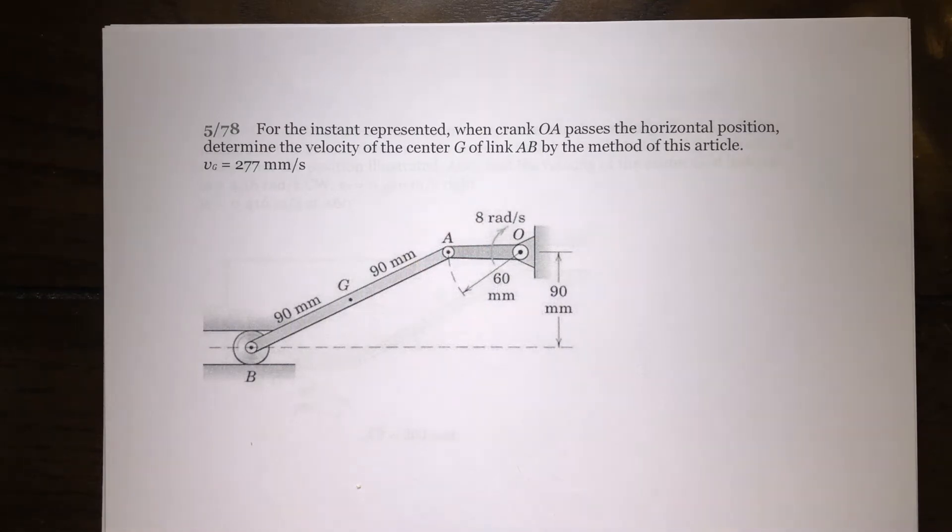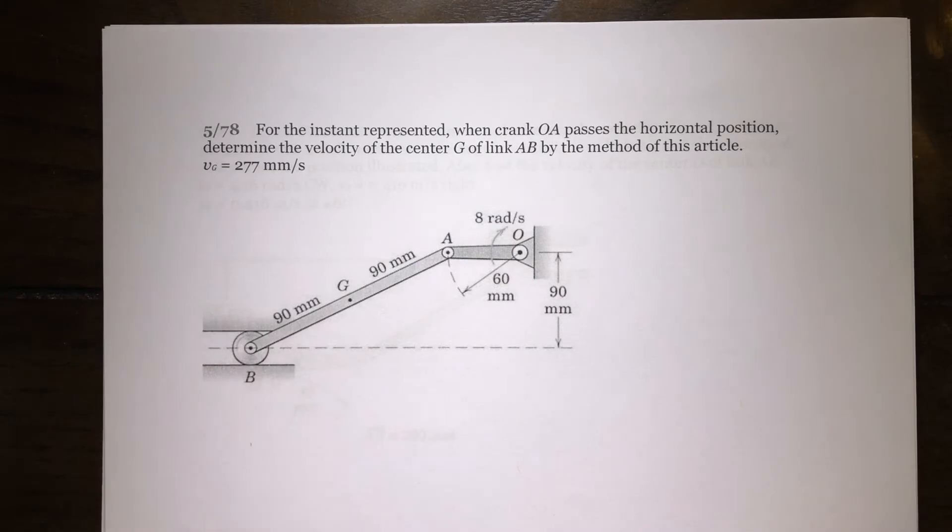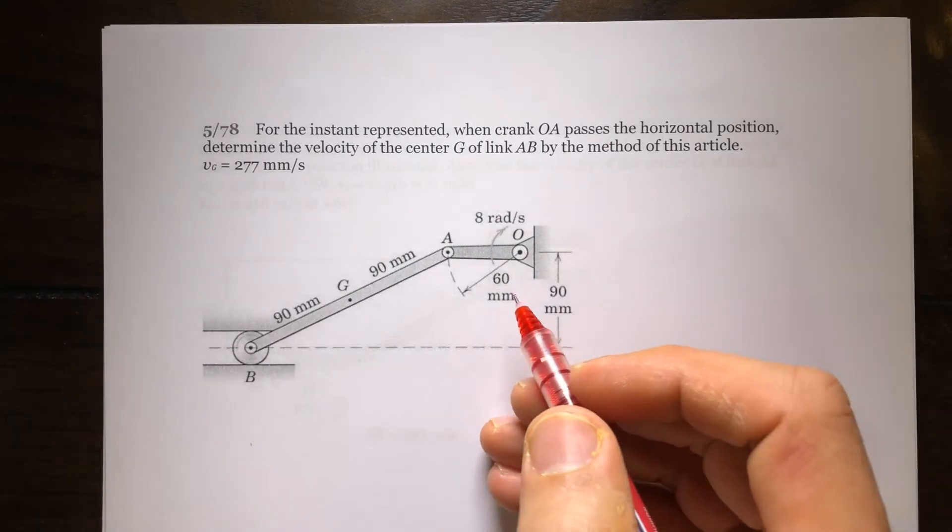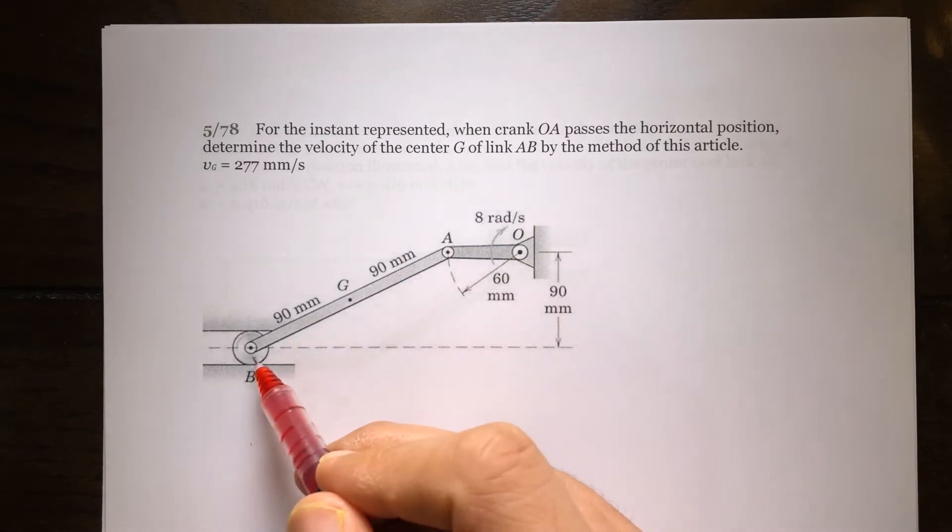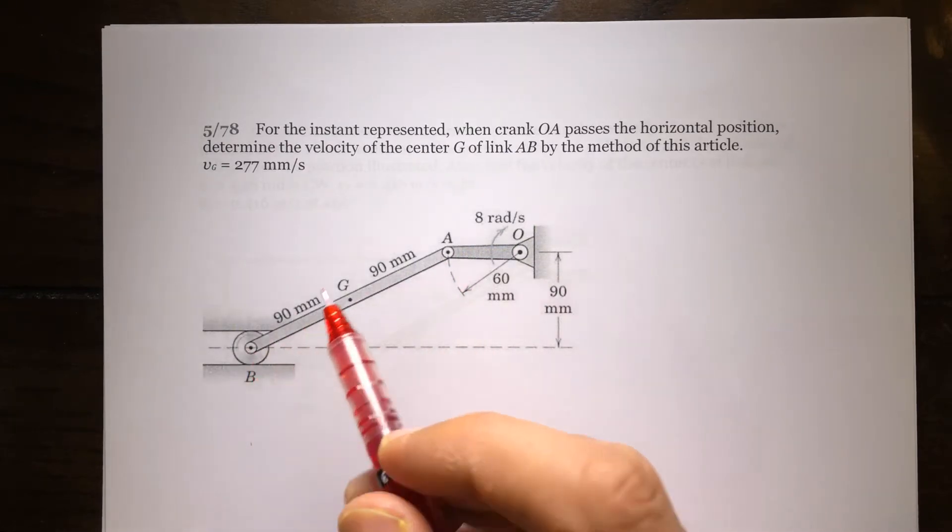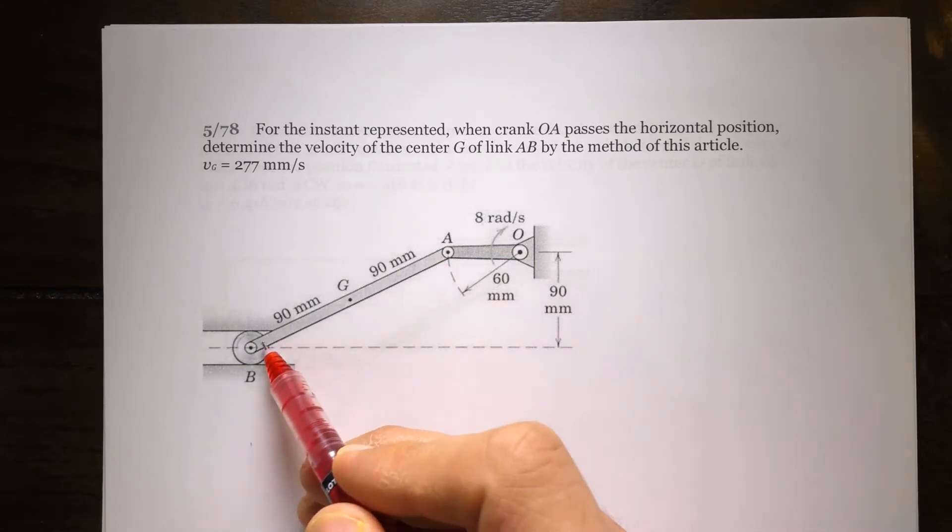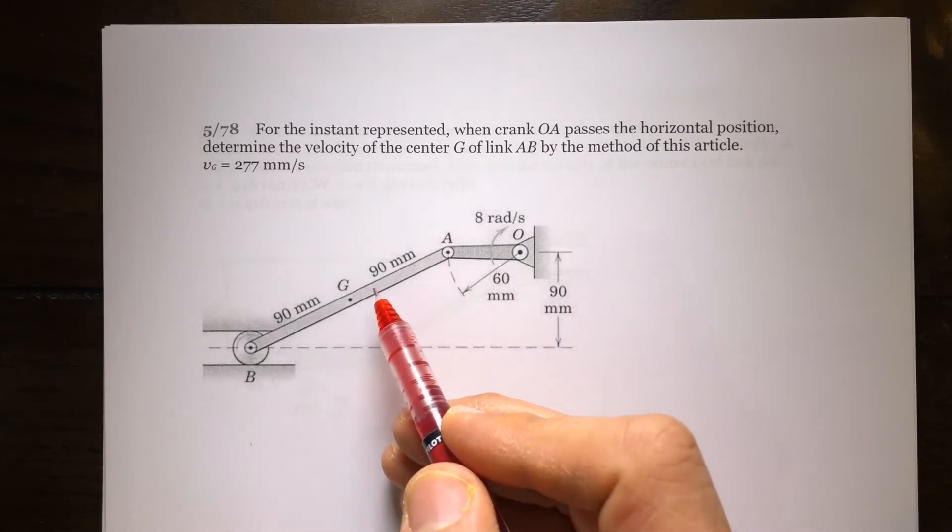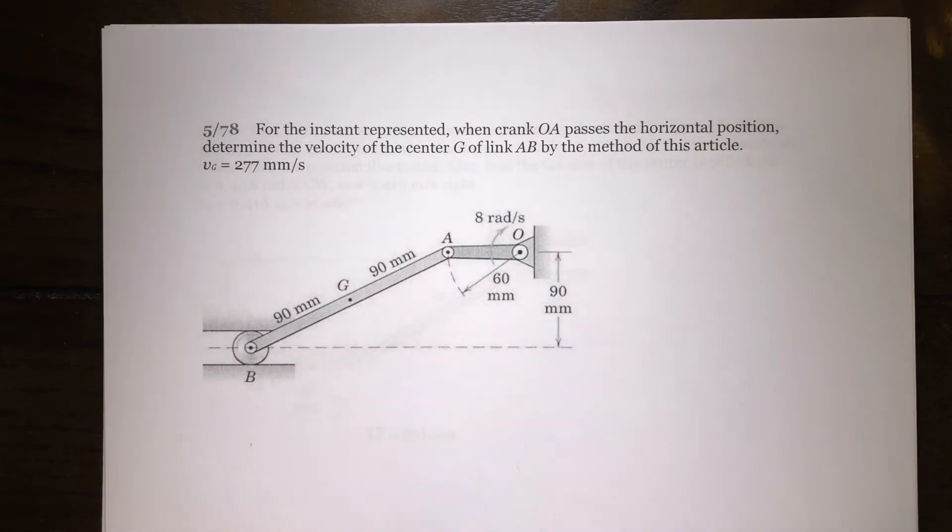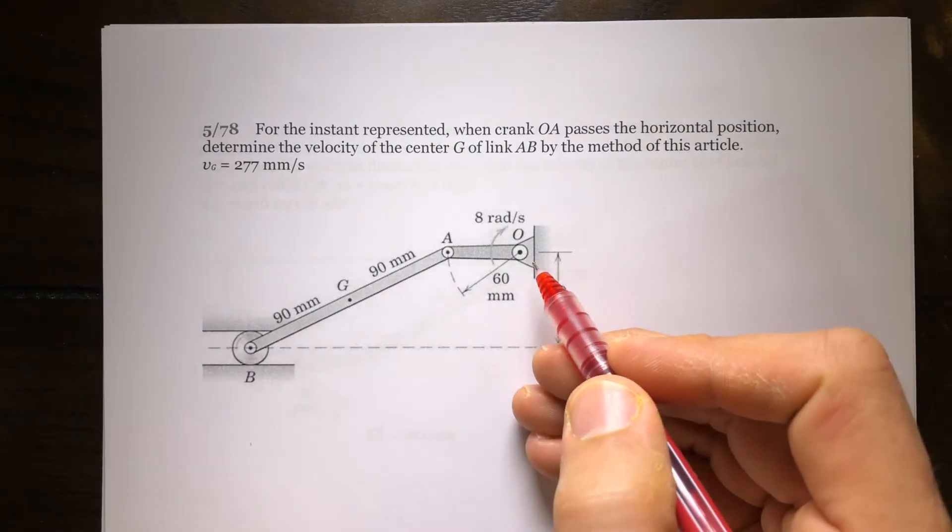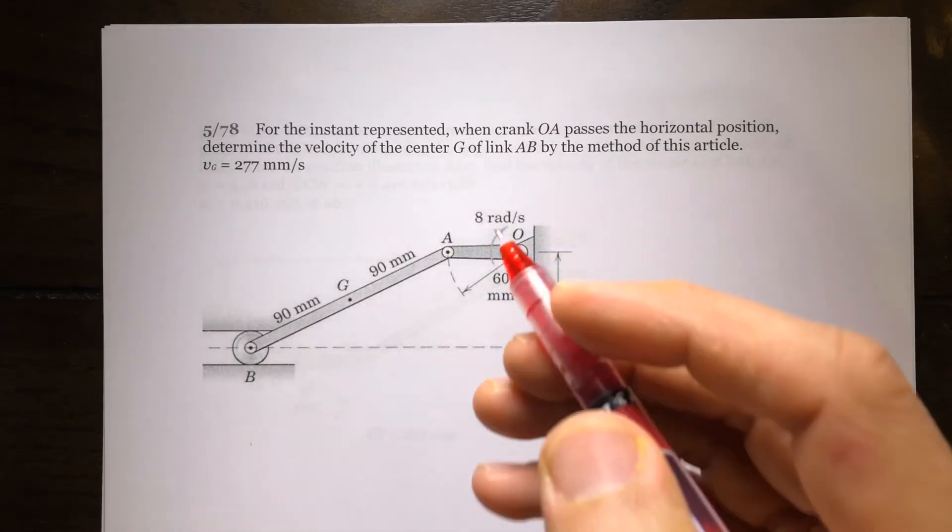You should think about this problem for 10 minutes or so. Okay, I assume you did that. There are different ways to solve this. You can use relative velocity between A and B to find angular velocity of this link and use that to find velocity of G. But here we want to use just the center of rotation or instantaneous center.